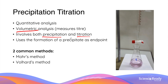Unlike conventional titration, precipitation titration uses the formation of a precipitate, usually with a unique colour, to indicate the end point of the titration. In this video, we will use two common methods of precipitation titration to demonstrate key features you need to know for this analytical technique.